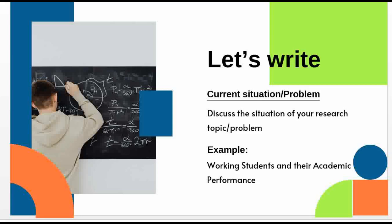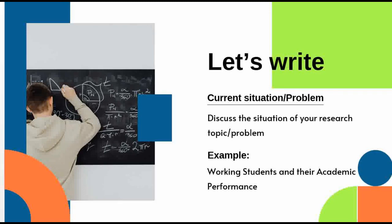For example, if you want to study working students and their academic performance, you need to discuss the current situation of working students in the Philippines. To begin with your topic, you have to discuss whether working students are common, how many working students there are in the Philippines, their approximate ages, what their grades are like — whether high or low. Meaning, you are now discussing the problem or the topic of your research.